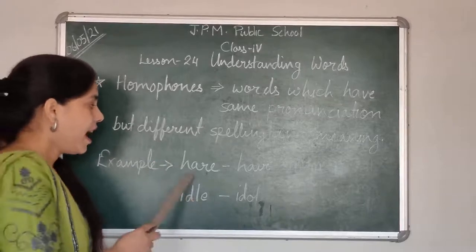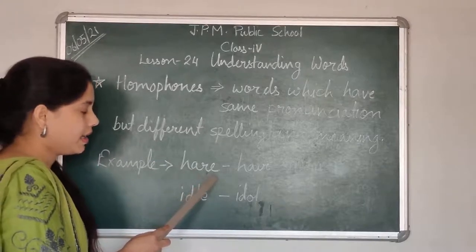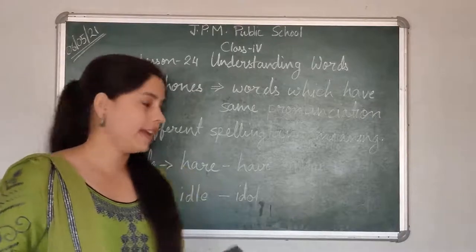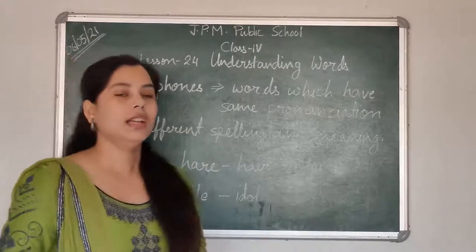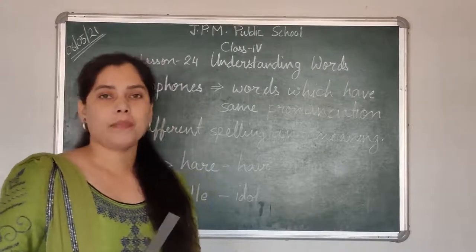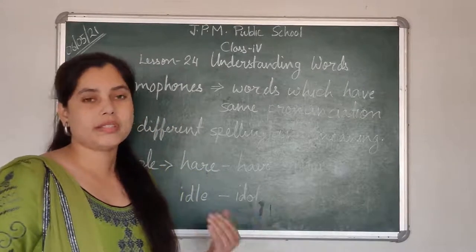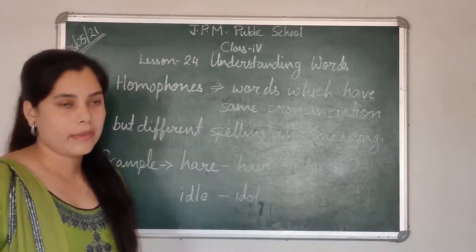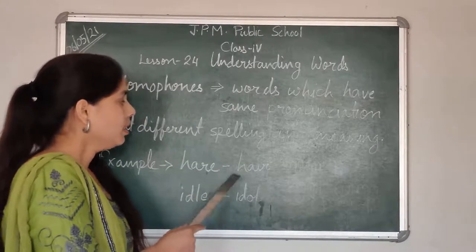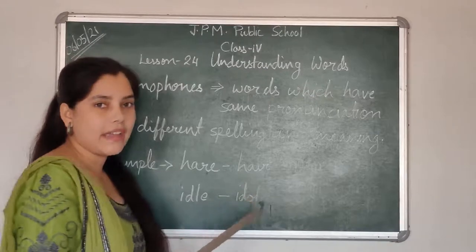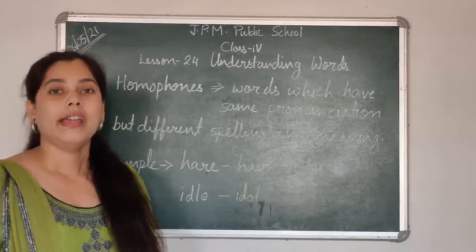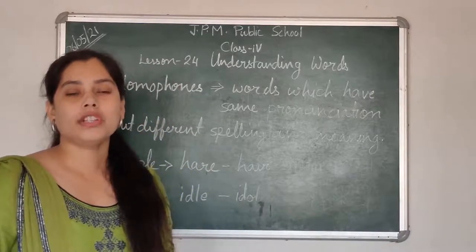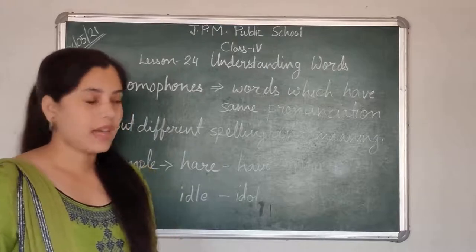For example, hare — H-A-R-E, and hair — H-A-I-R. Dear students, you all must have read about hare in your gender topic. In the gender topic, you must have noticed that hare is the name of a rabbit. And H-A-I-R, hair — what is hair? Hair is a thin strand which grows on a human head or other different body parts.